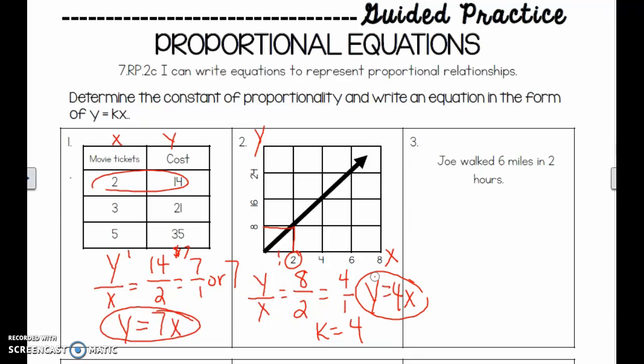On the third one, Jill walked 6 miles in 2 hours. This is our y. This is our x. We do y over x first. We have 6 over 2. This equals 3. So to write my equation, I write y equals 3x. Make sure you have all the notes. I'm going to scroll down.